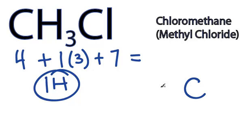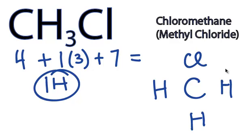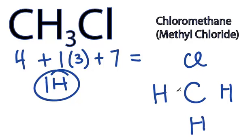Carbon will go in the center. Hydrogens always go on the outside. And then chlorine, which is very electronegative, also will go on the outside. We have 14 valence electrons. We'll put 2 between each of the atoms to form a chemical bond. We've used 8.